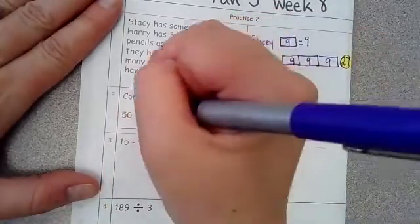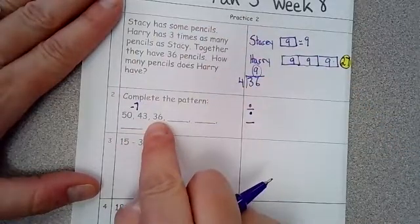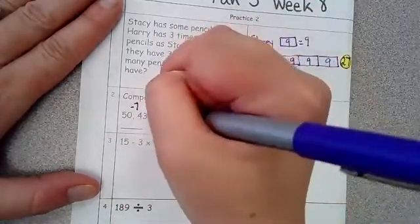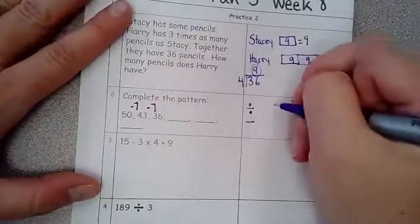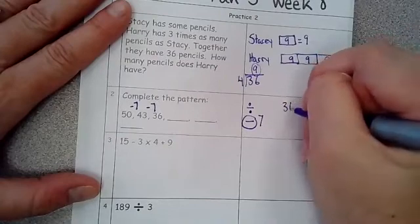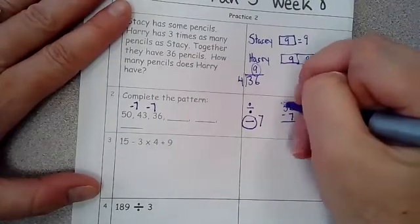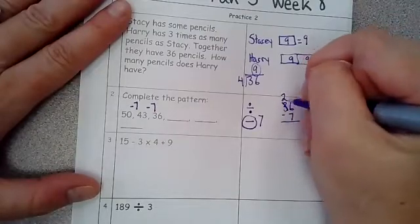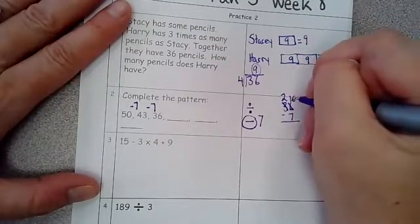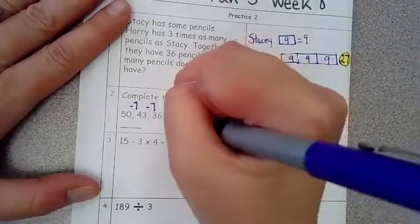So 50 going to 43, it is subtracting seven. From 43 to 36, it subtracts seven again. So we're going to keep doing that. This is a subtract seven pattern. So 36 subtracts seven. I can't take seven away from six. So I'm going to borrow from the three, it turns into a two, then this is 16. 16 minus seven is nine, bring down your two. So this is 29.